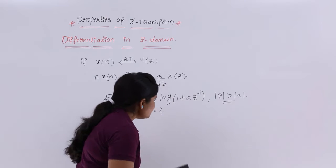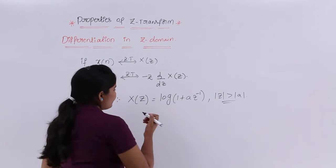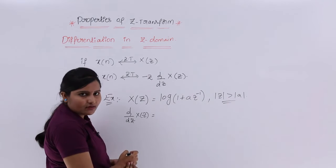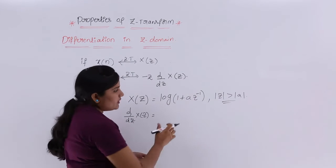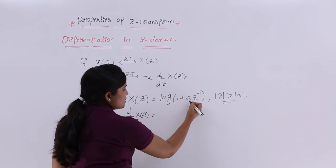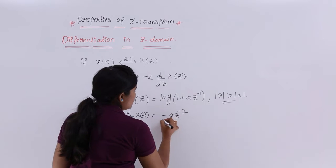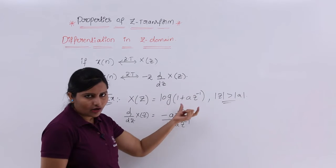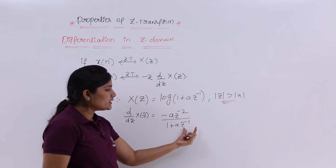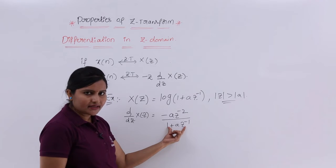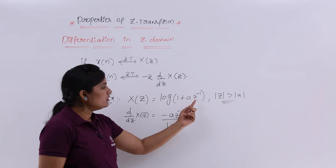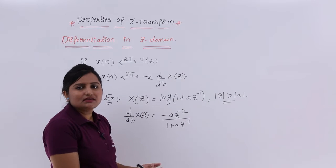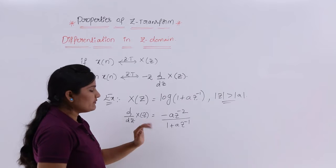Here I am considering my X(Z) = log(1 + AZ⁻¹) as given. I want to take the differentiation d/dZ of X(Z). Since we have a logarithmic function, the differentiation gives minus AZ⁻² divided by (1 + AZ⁻¹). The differentiation of the constant is 0, the power decreases giving AZ⁻², and we have a minus sign. So d/dZ of X(Z) = −AZ⁻²/(1 + AZ⁻¹).